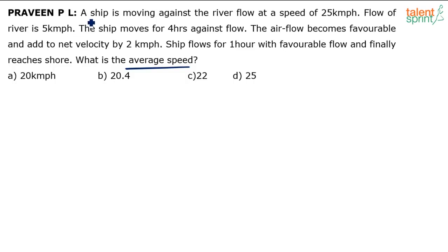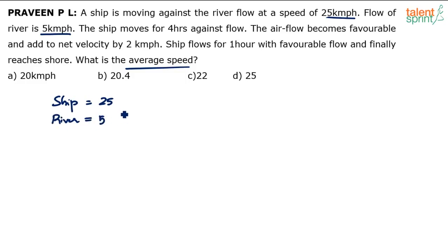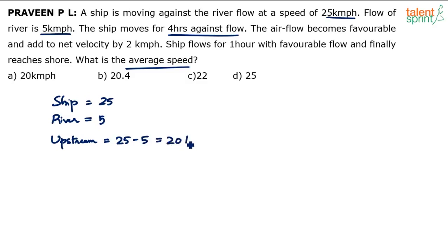The ship is moving against the river flow at a speed of 25 kilometers per hour — so this is the speed of the ship. The speed of the river is 5 kilometers per hour. The ship moves for 4 hours against the flow, which is upstream. So what will be the upstream speed? Speed of the ship minus speed of the river: 25 minus 5, which equals 20 kilometers per hour.